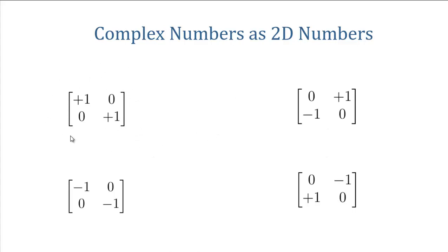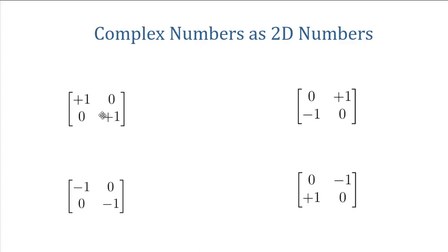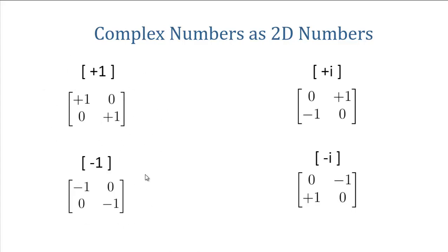This 2x2 matrix here corresponds to the number positive 1. This is the two-dimensional version of the one-dimensional plus 1 — you have plus 1 in two locations in the matrix and they both have the same sense. This here is minus 1. Minus 1 has a negative 1 in each element of the forward diagonal. Both of these identities have 0 in the backward diagonal. So these are what we would call real identities or real numbers — this matrix is positive 1, this matrix is negative 1.